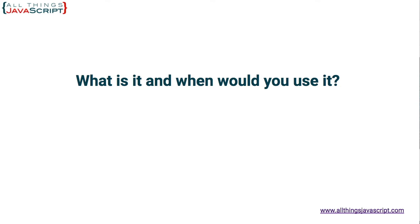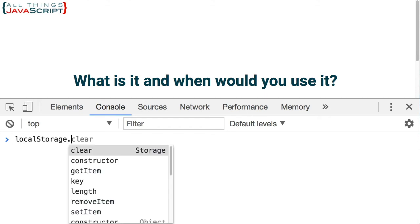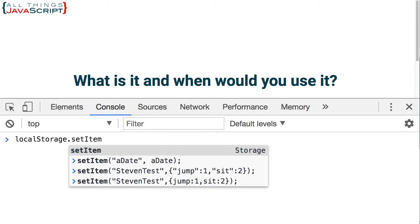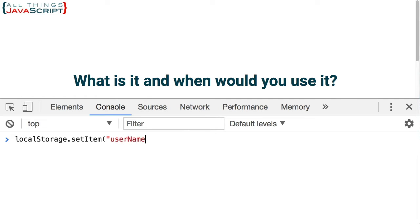We will talk about the differences between local storage and session storage in just a moment. But let's first look at a simple example of using them. I am going to do this in the console. I access local storage and use the set item method. What I need to do is pass in the identifier I want to give to the information I am going to store — that is going to be username — and then I pass in the information I want to store. There I have set it up in local storage.